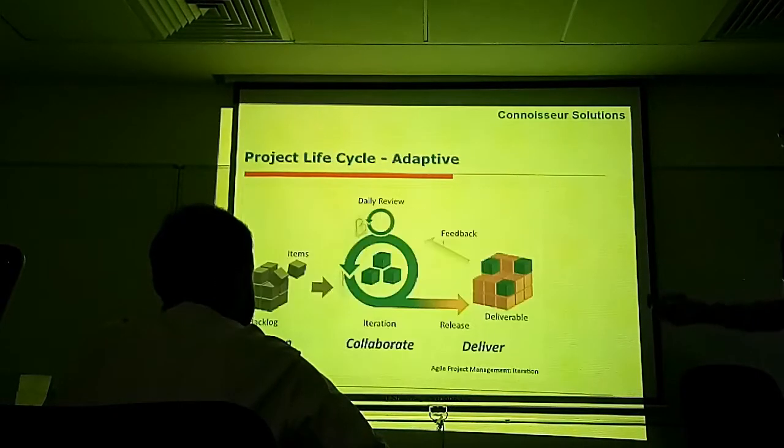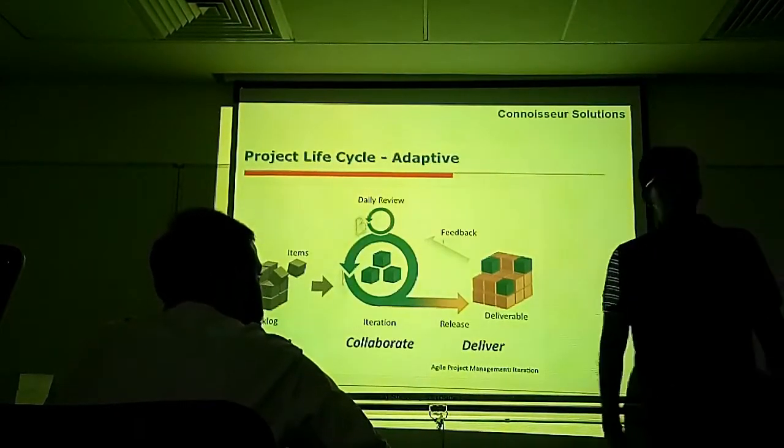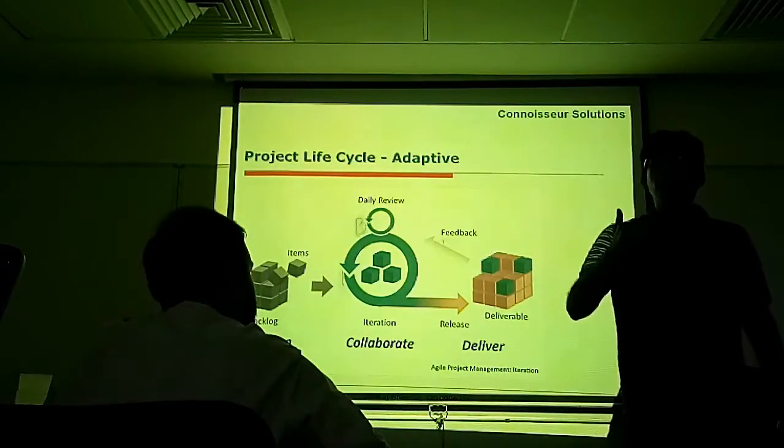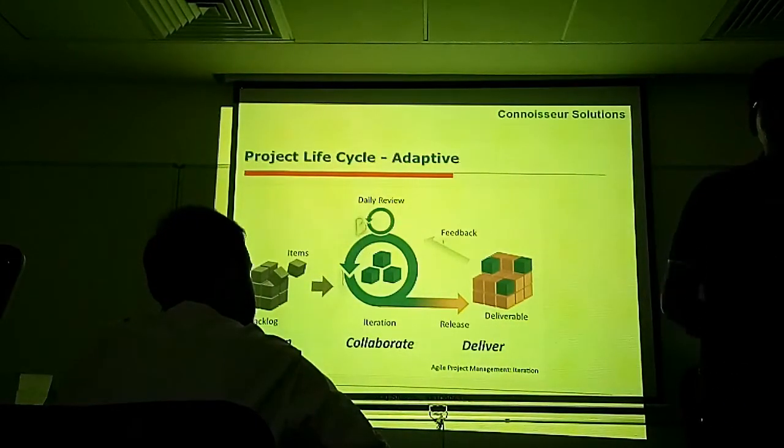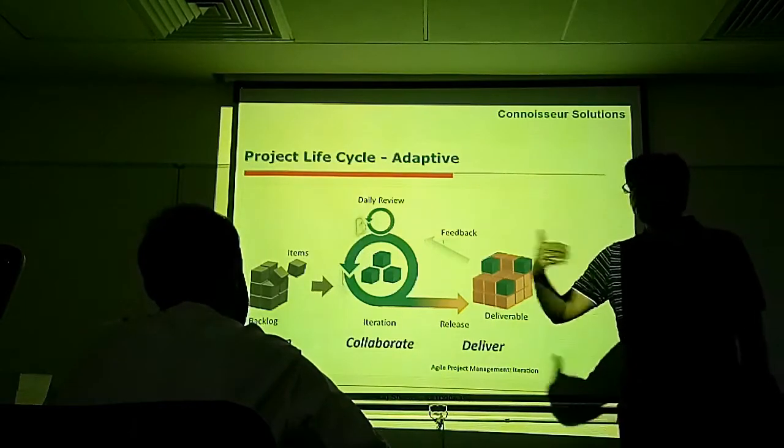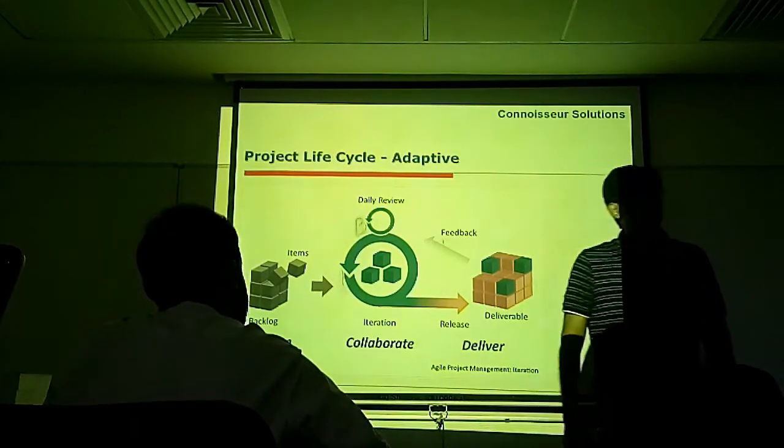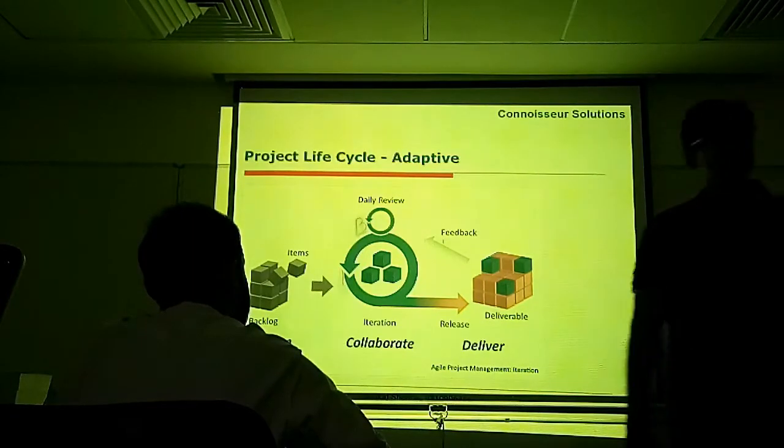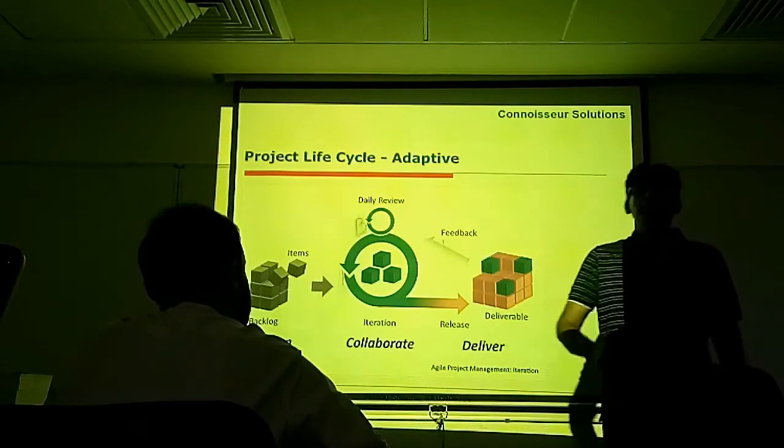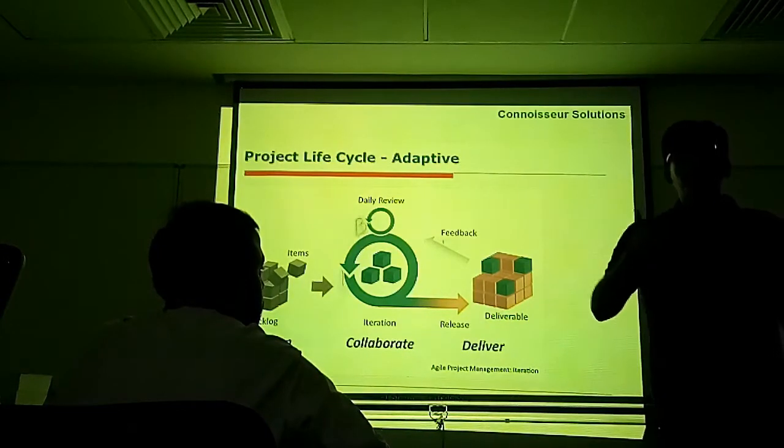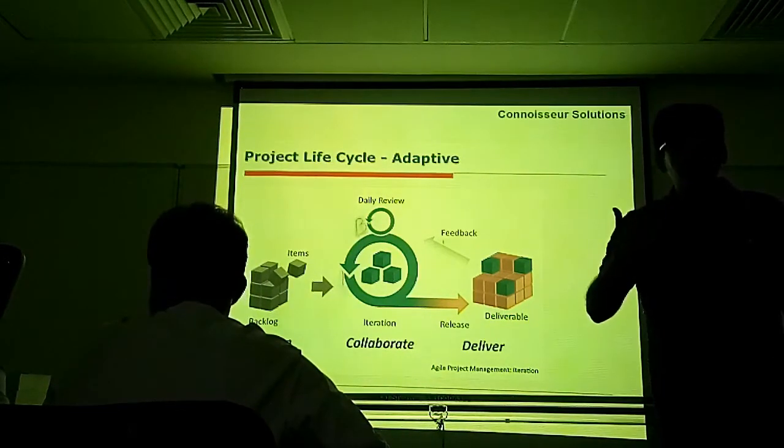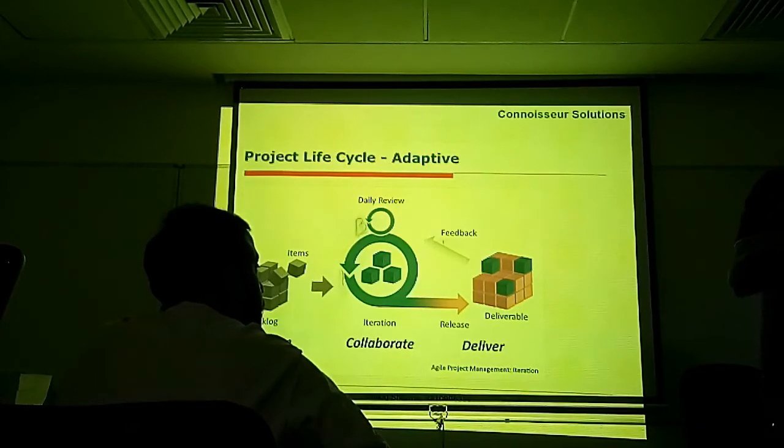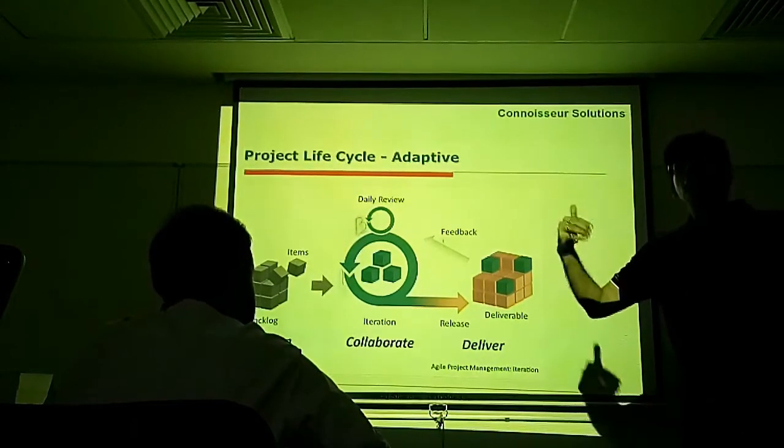For this, we can use adaptive life cycle. Now, what do we do in adaptive life cycle? Adaptive means agile. Now, what do you mean when you say agile? Agile means being flexible. Agile means being flexible and possessing an ability to create and respond to change in order to make profit in a turbulent business environment.